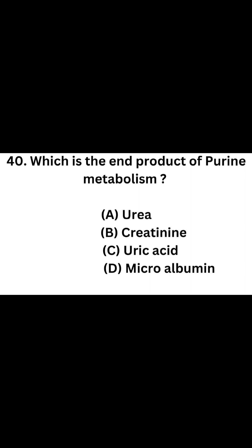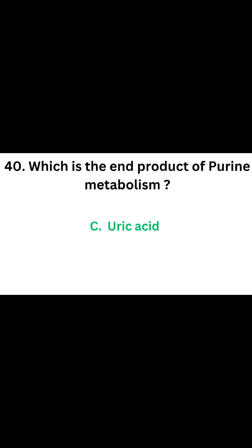Question number 40. Which is the end product of purine metabolism? Option A: Urea. Option B: Creatinine. Option C: Uric acid. Option D: Microalbumin. The correct answer is Option C, Uric acid.